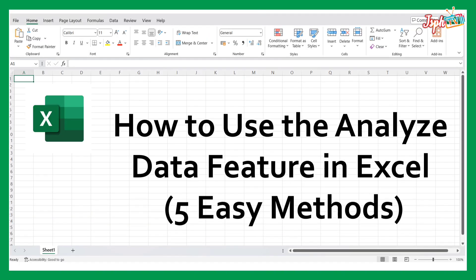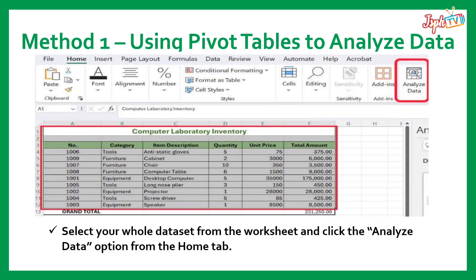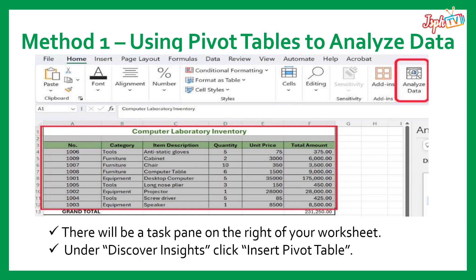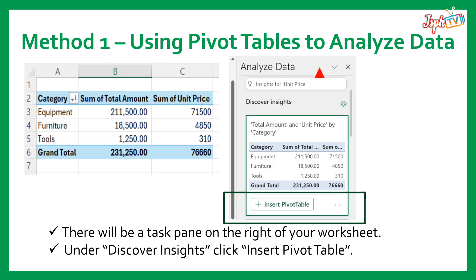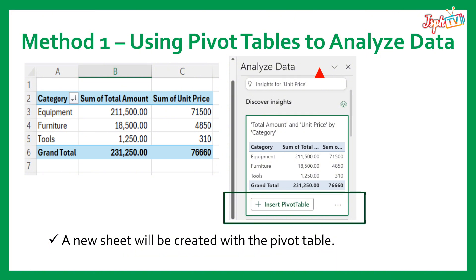How to use the Analyze Data feature in Excel — 5 Easy Methods. Method 1: Using Pivot Tables to Analyze Data. Select your dataset from the worksheet and click the Analyze Data option from the Home tab. There will be a task pane on the right of your worksheet. Under Discover Insights, click Insert Pivot Table. A new sheet will be created with the Pivot Table.